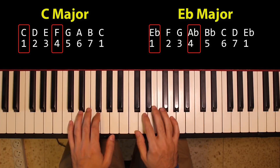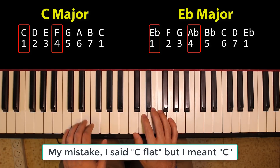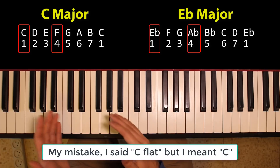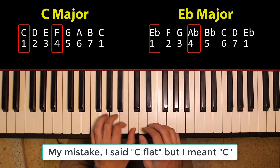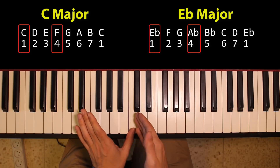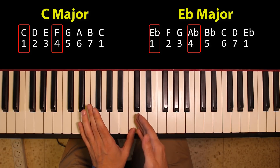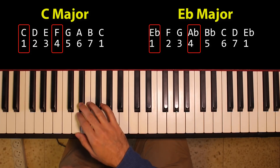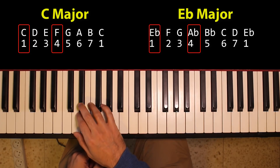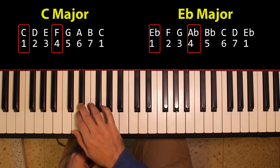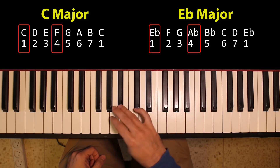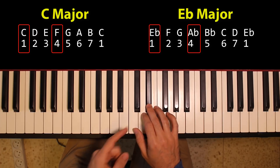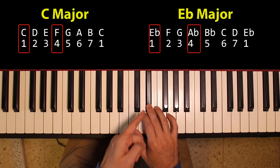In the key of C, the notes have numbers 1, 2, 3, 4, 5, 6, 7, 8 — which is 1 again. And the same is true in the Eb scale: 1, 2, 3, 4, 5, 6, 7, 8 — which is 1 again.